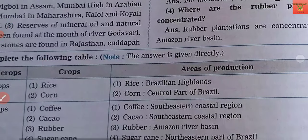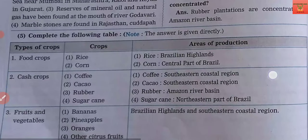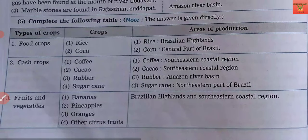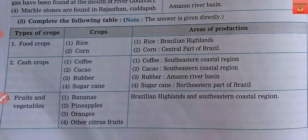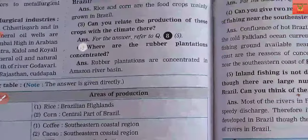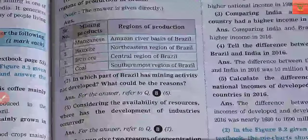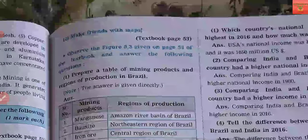Next is a table which we have to complete. First, complete food crops — rice and corn — for Brazil. Then cash crops, fruits, and vegetables. You need to identify the different areas where these are produced and point them out. Mostly, these can come as objective-type questions.